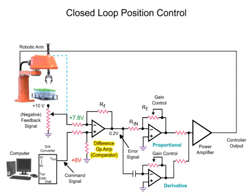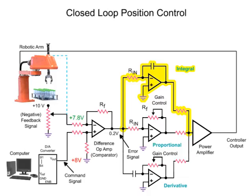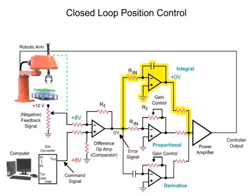To overcome the steady-state error, an integral amplifier is added to the circuit. With an error signal of zero, the output voltage of the integral amplifier is zero. The integral amplifier increases gain depending on the duration of the error signal — the longer the error is present, the larger the amplifier gain. The output of the integral amplifier increases and is further amplified by the power amp to overcome the friction and mass of the robotic arm and complete the final move to the desired position.